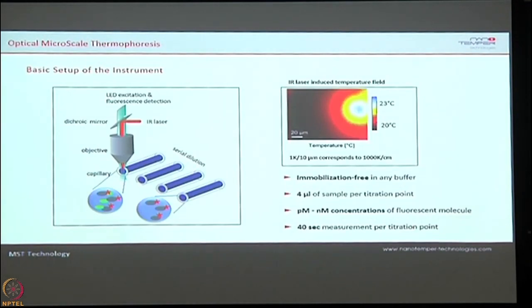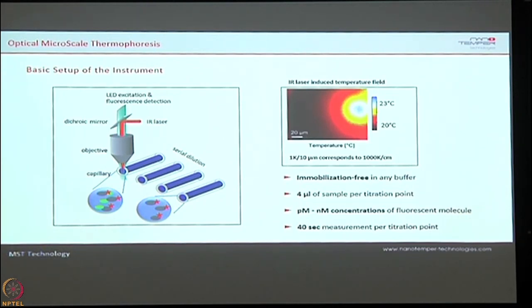With this basic principle of thermophoresis, we built an instrument with two important things: one is a laser that creates a temperature gradient for thermophoresis, and one of the binding partners is fluorescently labeled. There is a fluorescent detection unit, and the biggest advantage is you are not immobilizing anything. You directly determine the binding affinity in buffer, requiring only 4 to 5 microliters of sample. Normally you do a dilution series of 12 to 16 dilutions, and every dilution takes 40 seconds to scan.